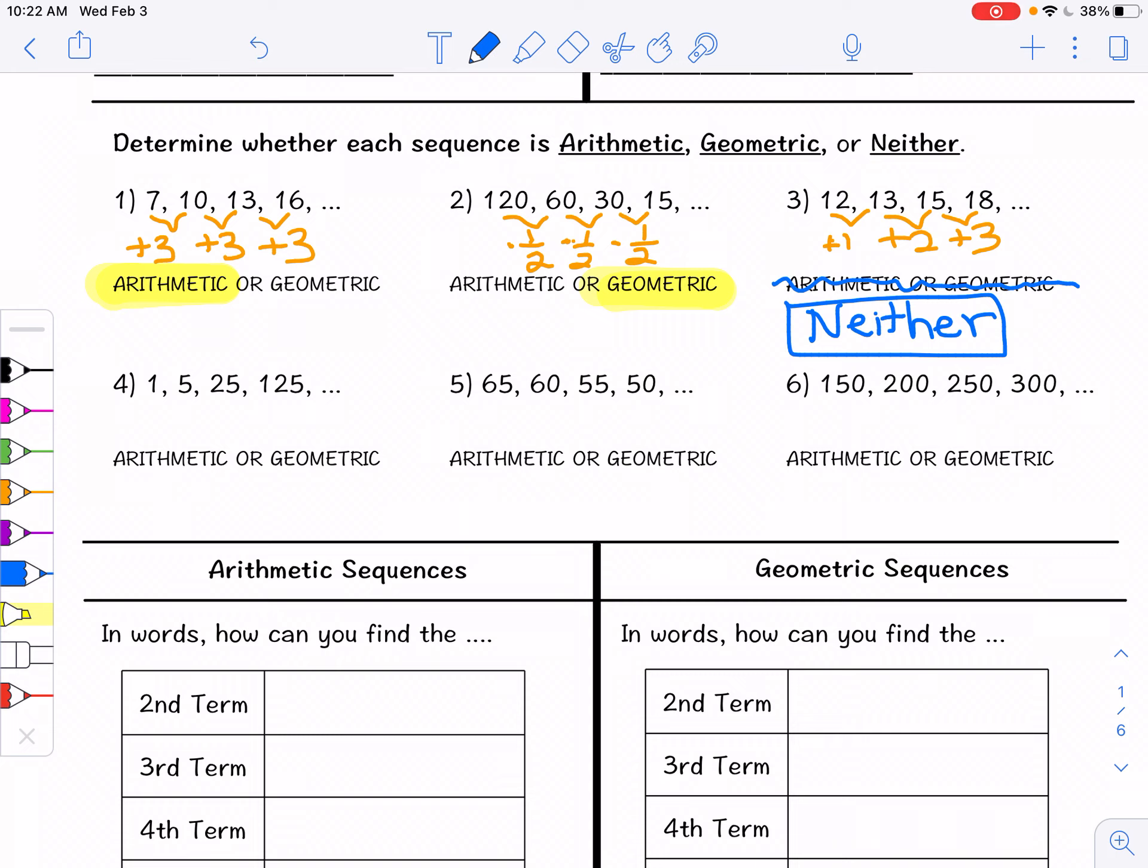Then we have 1, 5, 25, 125. To go from one to the next I can multiply by 5. So because of this multiplication pattern we do have a geometric sequence.